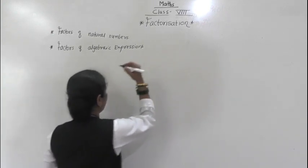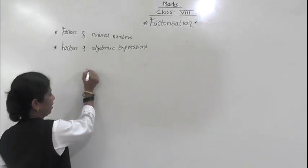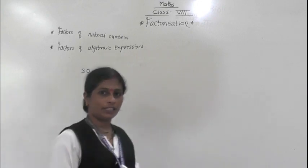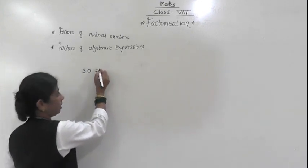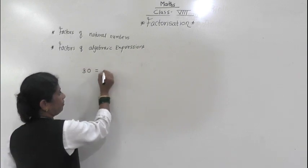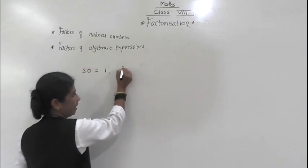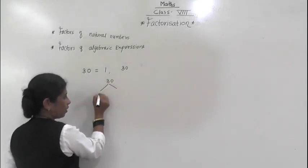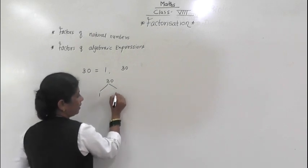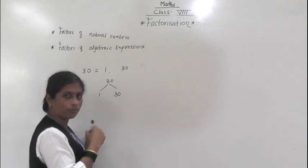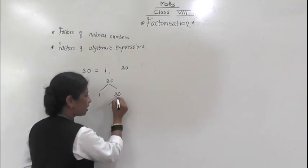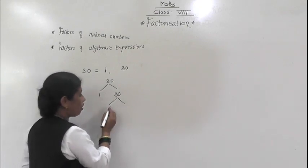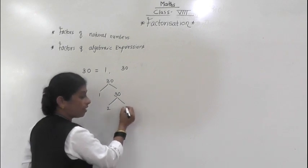If we take 30 — natural numbers are the numbers starting from 1 to unlimited. So 30: every number always has 1 as a factor and the number itself. So 1 is a factor of 30, and 30 itself is a factor of 30. Then again, what are the factors? 30 means in which table? 5 sixes are 30, or we can say 2 × 15 = 30.